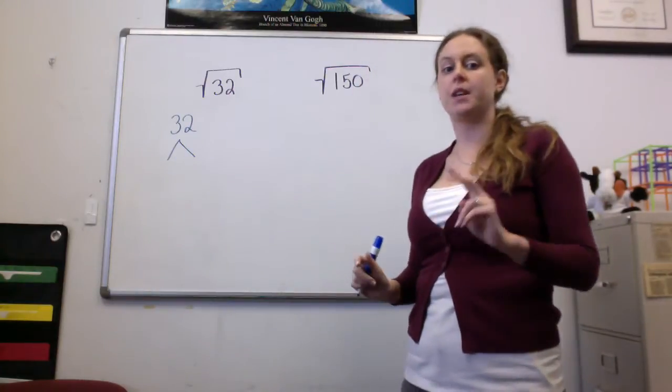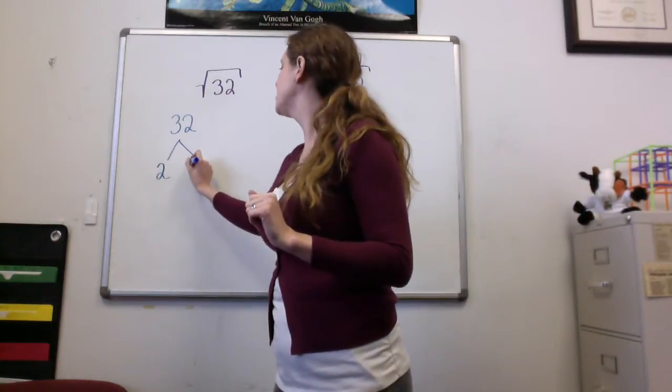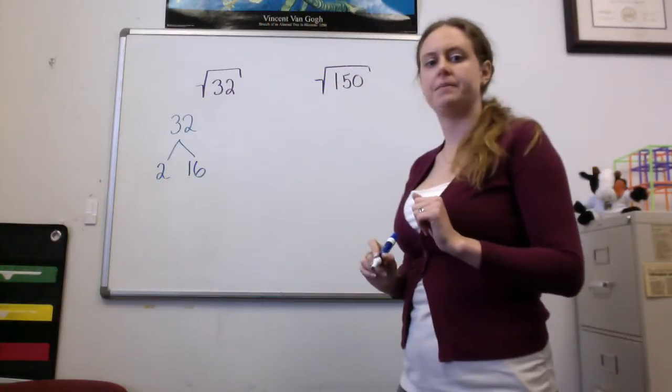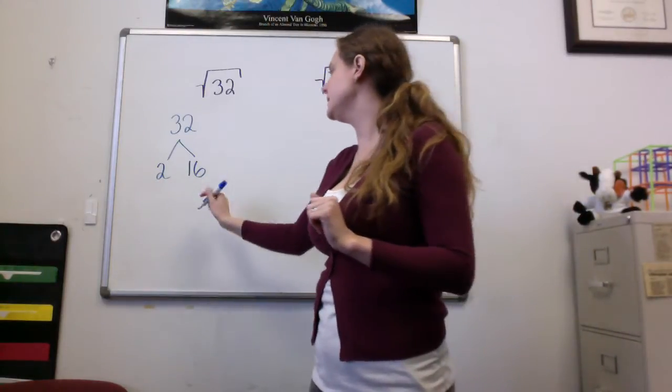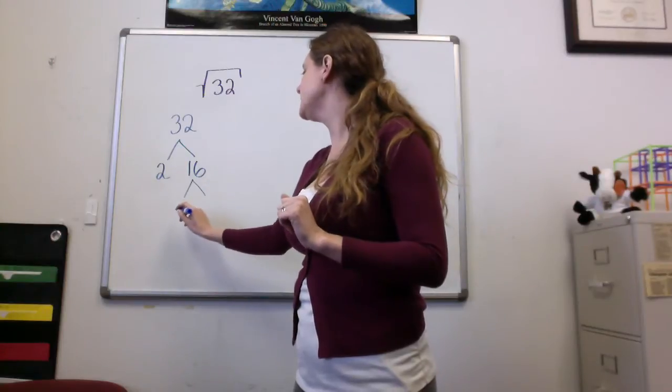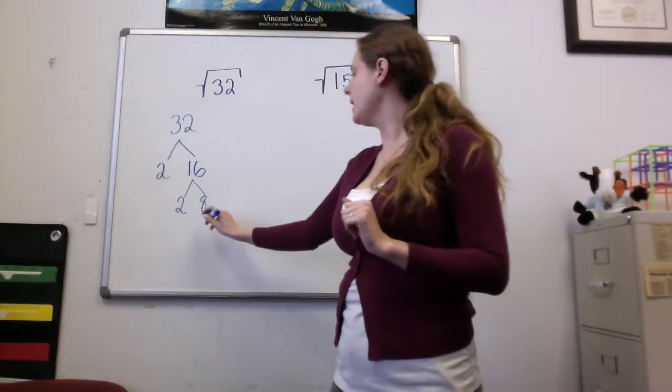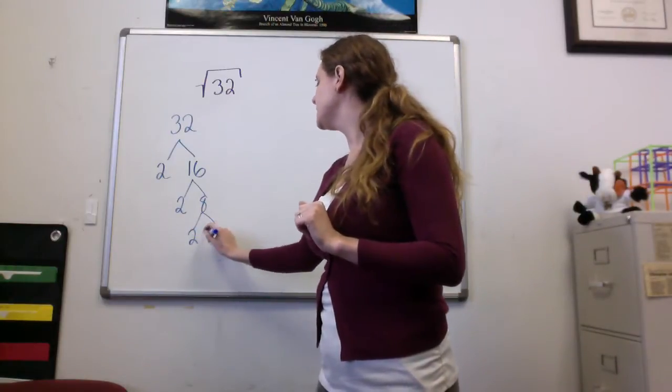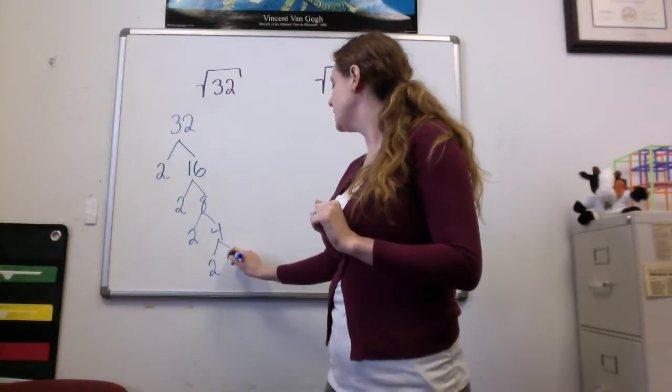So 32, I'm going to think about two things that multiply together to give me 32. One possible answer is 2 and 16. 2 is a prime number. 16 is not, so I'm going to keep going. 16 is 2 times 8. 8 is 2 times 4. And 4 is 2 times 2.